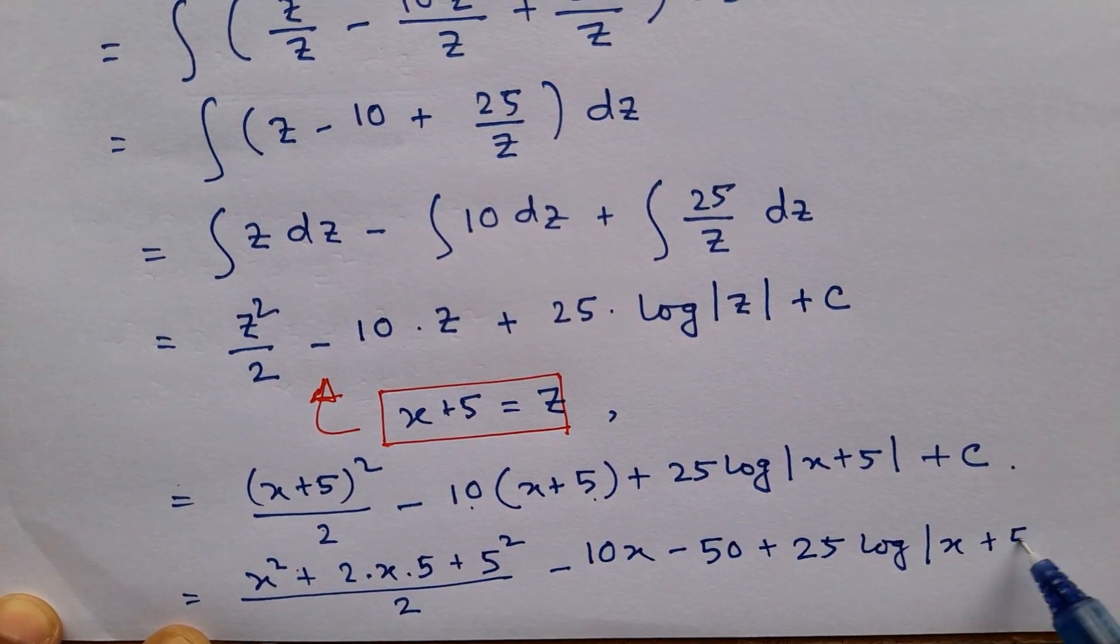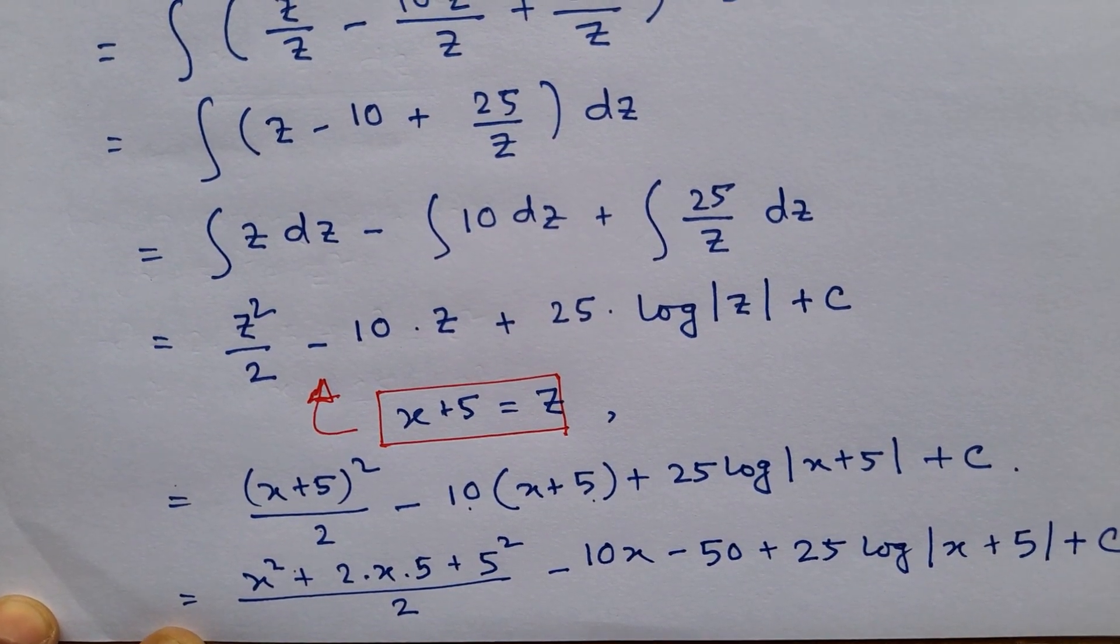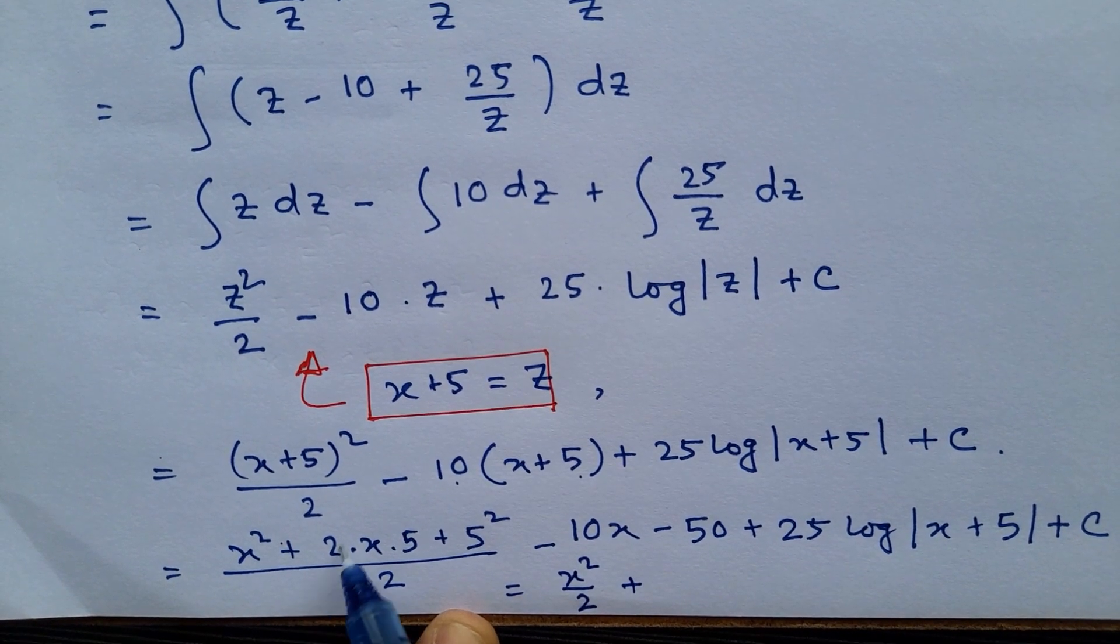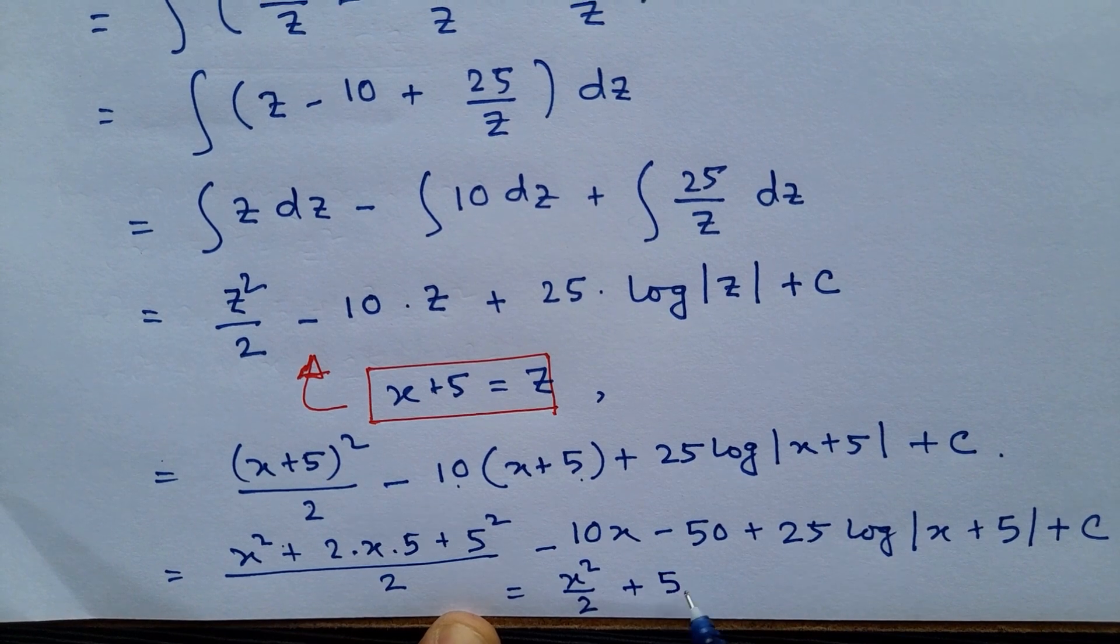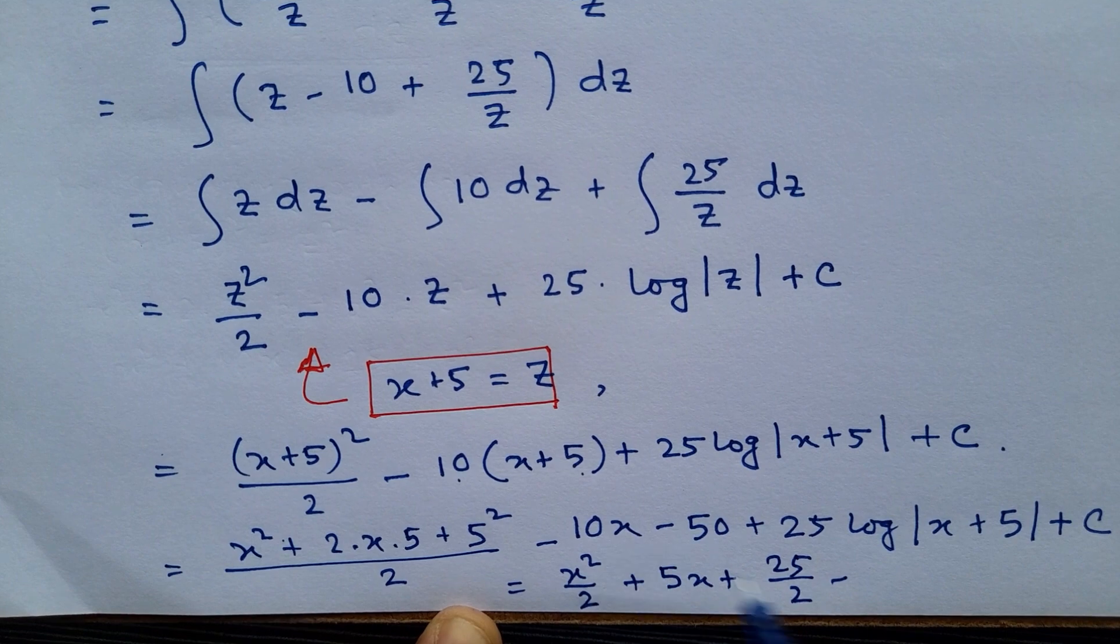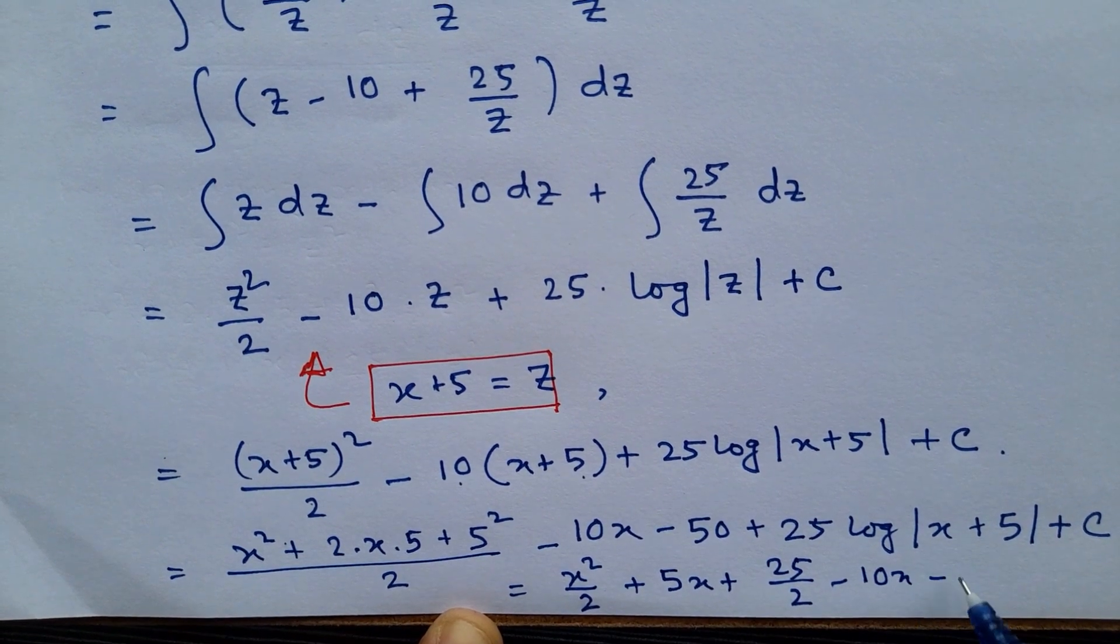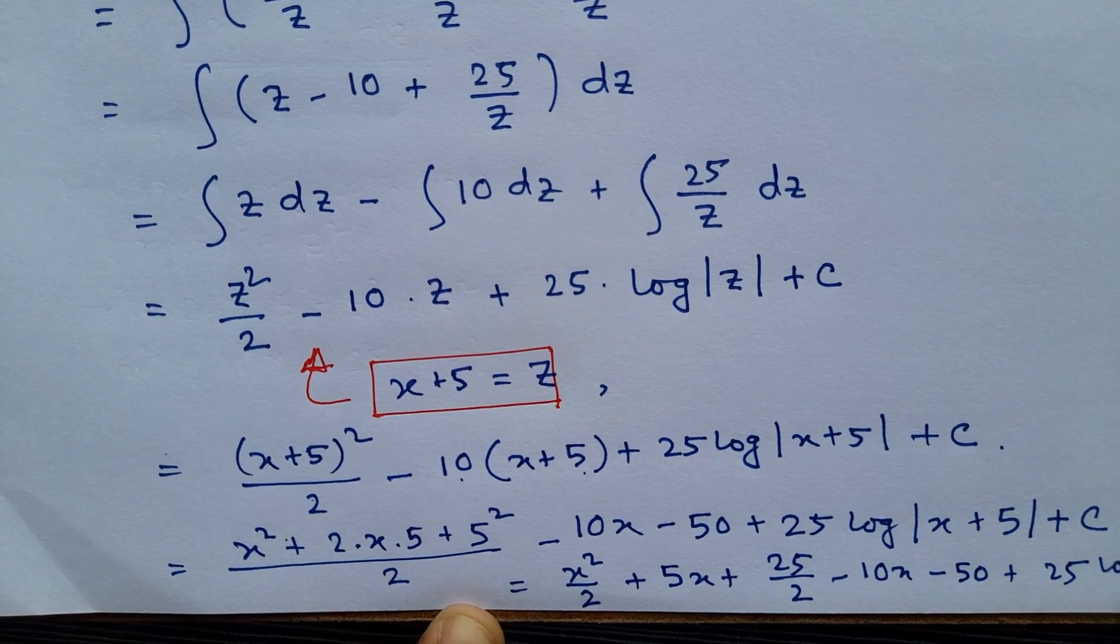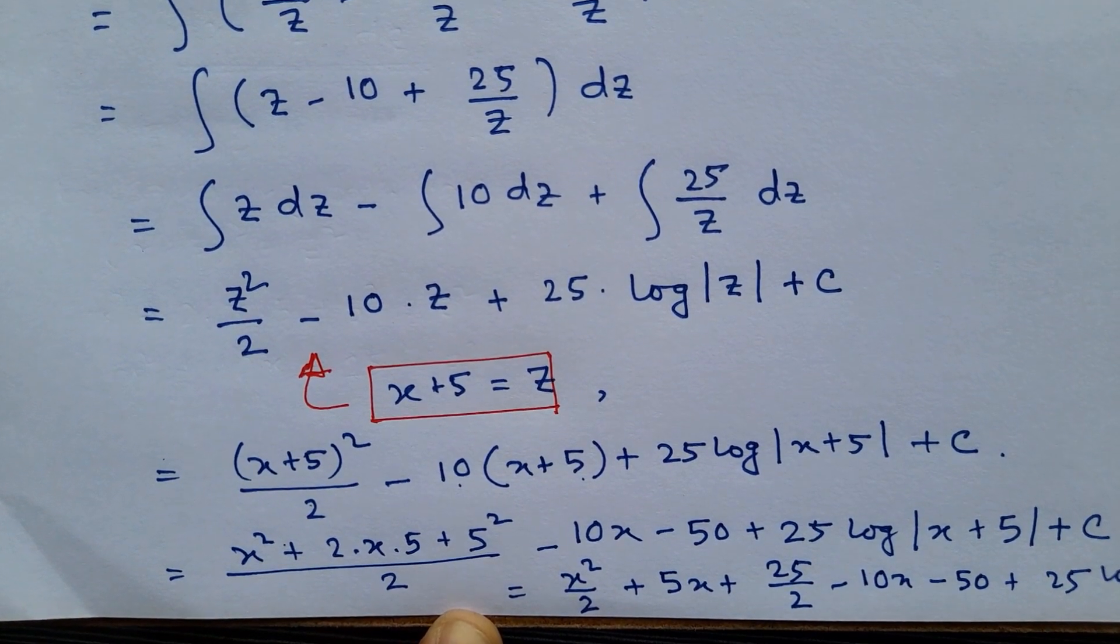This will become x squared by 2 plus 5x plus 5 squared by 2 minus 10x minus 50 plus 25 log of mod x plus 5 plus c.